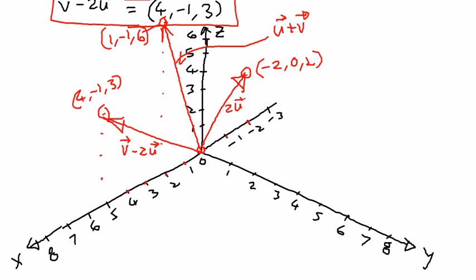This is a three-dimensional graph, so it becomes a bit complicated, but if we keep track of our units and what we're doing, we should be able to plot them out. In my next presentation, we'll look at some more examples using vectors in n-spaces.